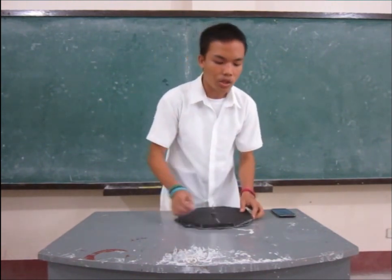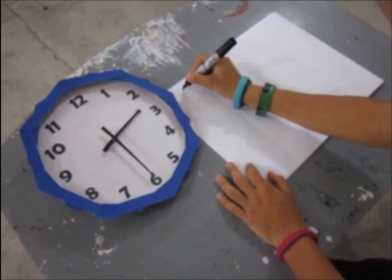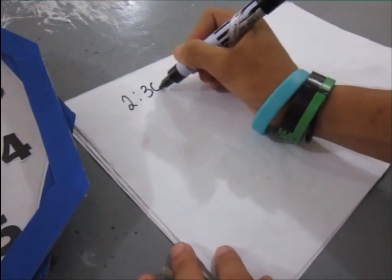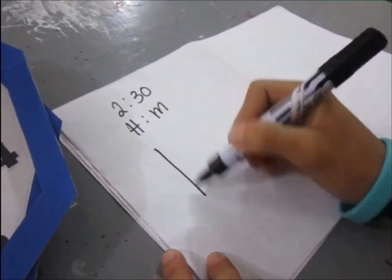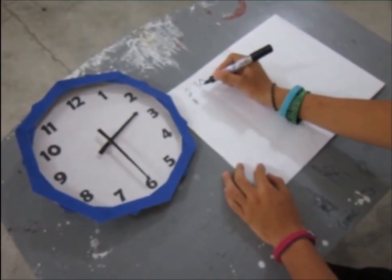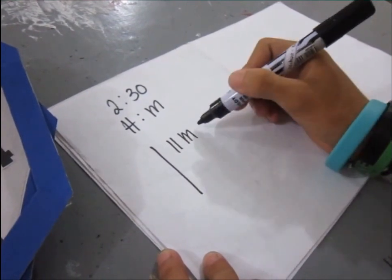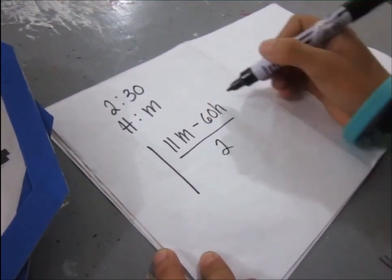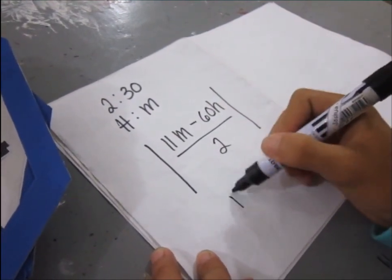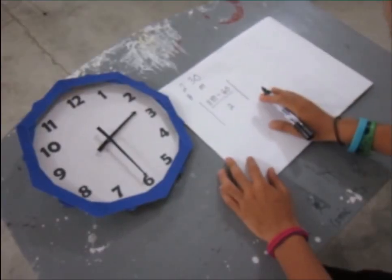Okay, so this is the solution. If the time is 2:30, we let this 2 as the h, and this 30 is our minute. So substitute to the formula: 11m minus 60h all over 2, absolute value.